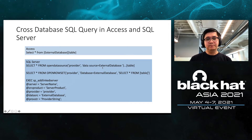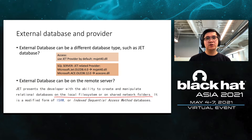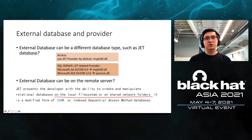Access uses the JET provider by default, so it will use MSJET 4.0 to do the cross-database SQL query. Is it possible to use JET to do cross-database queries in SQL Server? The answer is yes. You only need to set the provider with these strings — JET 4.0 or ACE 12.0 or 6.0 — to let SQL Server use the related JET database engine to do the cross-database SQL query. SQL Server can use JET database engine to do cross-database SQL queries. Very interesting, right?